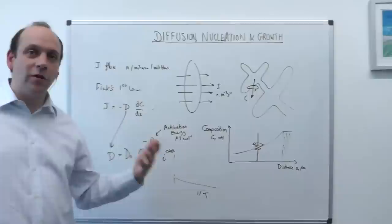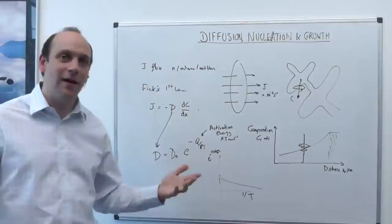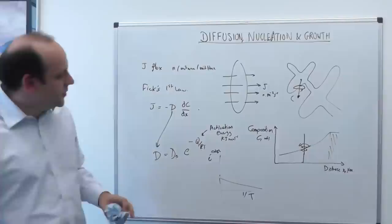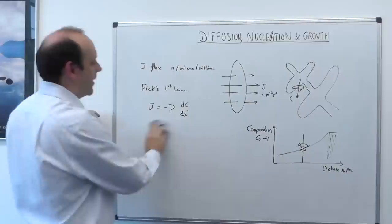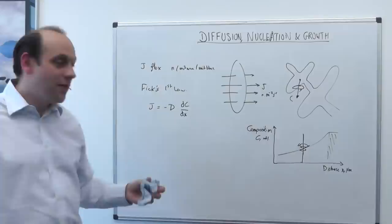So that's how we would take our solidified ingot and homogenize it, and the process by which that would happen. We can do all the calculations for how this would flatten out, which we would do in something like MSE 204.